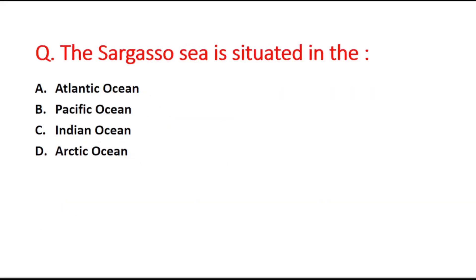Next question: The Sargasso Sea is situated in which ocean? Option A is Atlantic Ocean, B is Pacific Ocean, C is Indian Ocean, and D is Arctic Ocean. The right answer is option A, Atlantic Ocean.